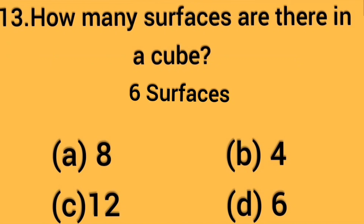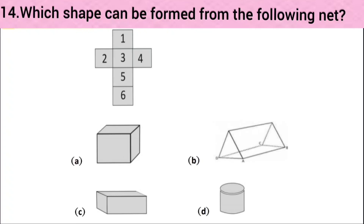Option A is 8 — incorrect. Option B is 4 — also incorrect. Option C is 12 — also incorrect. Option D is 6 — this option is correct. Only option D is correct, so I put a tick on option D.